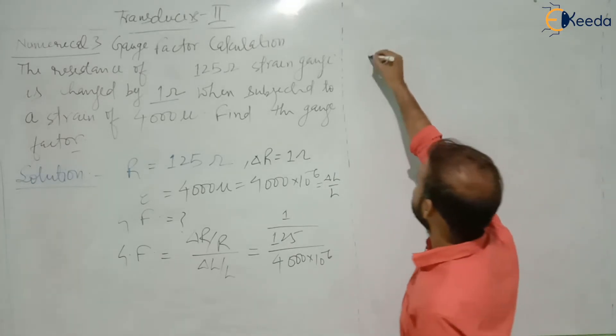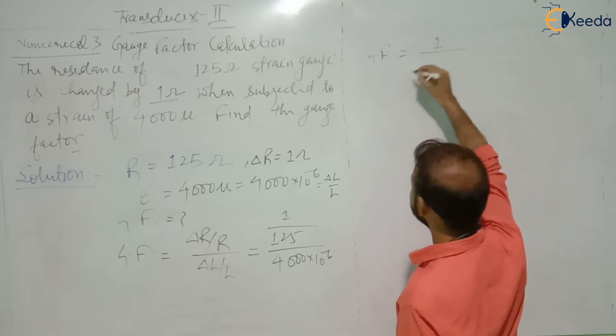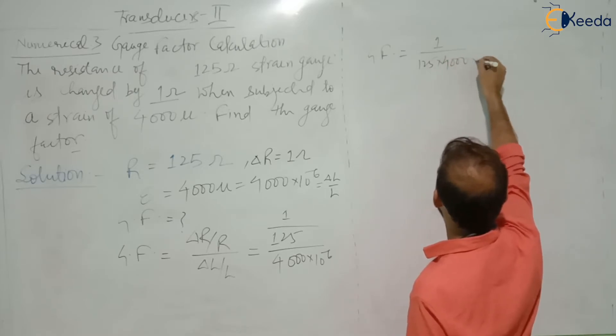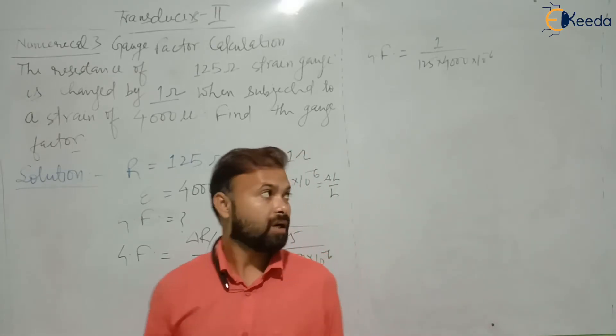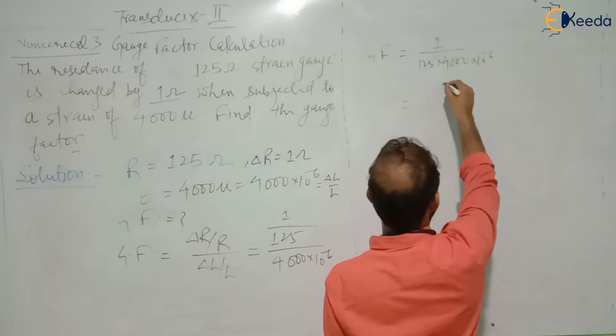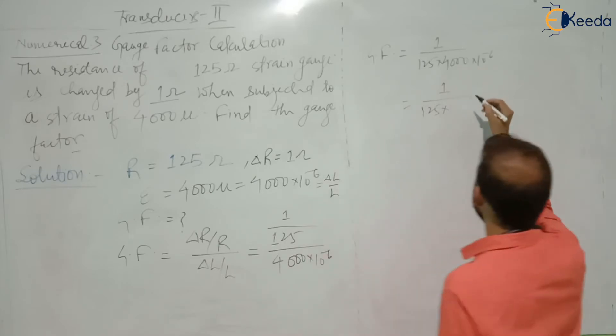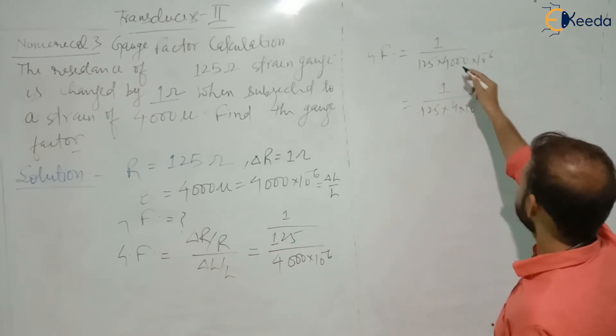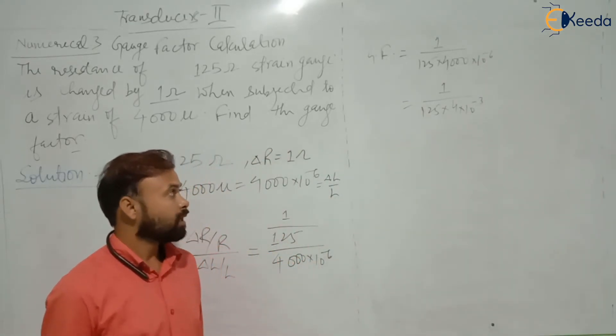Now, from here gauge factor will be equal to 1 divided by 125 into 4000 into 10 to the power minus 6. So it will be equal to 1 divided by 125 into this can be written as 4 into 10 to the power minus 3. 10 to the power 3 here and 10 to the power minus 6 here, it will be 10 to the power minus 3.